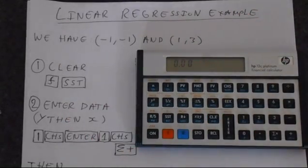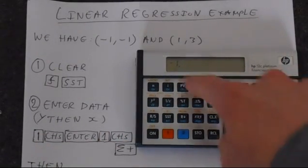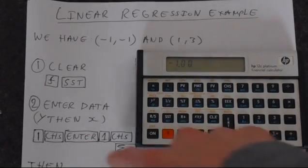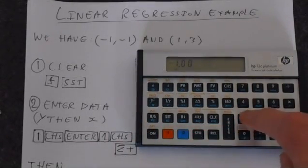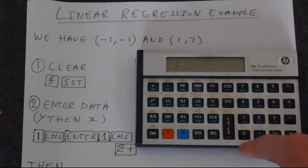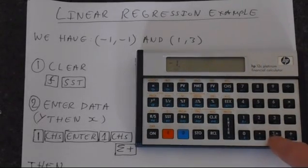The first thing to do is to enter our data. We're going to do 1, then CHS changes the sign, makes it minus 1. Then we're going to press Enter. And then the same thing again. We've got -1, -1. 1, change sign. And then we're going to add this to the stats memory by pressing this button here, sigma plus. And now this counter tells us how many points we've got. So we've got 1.